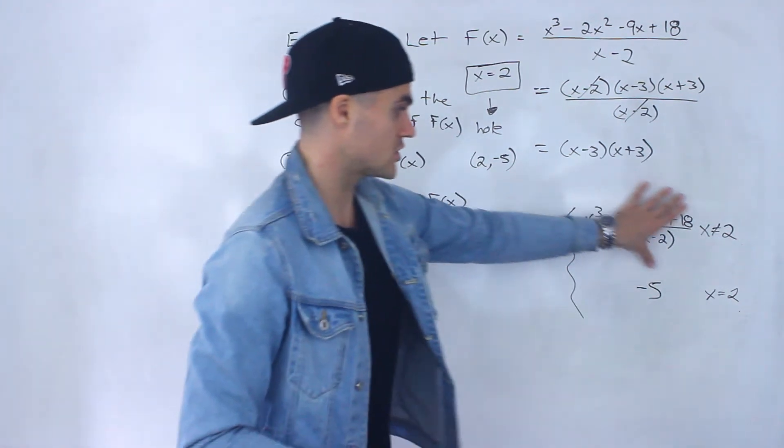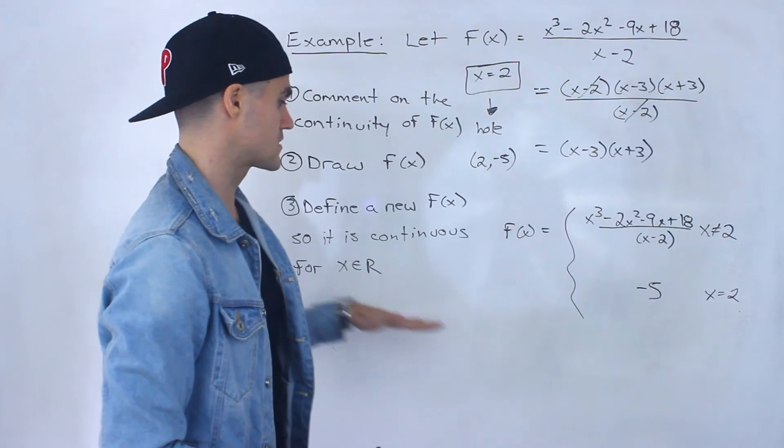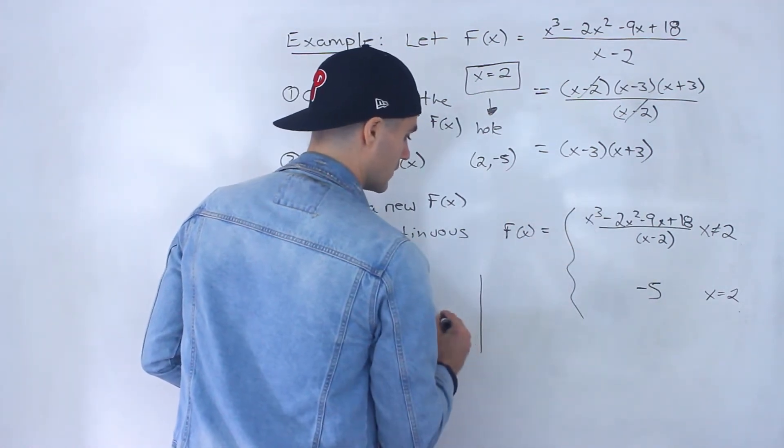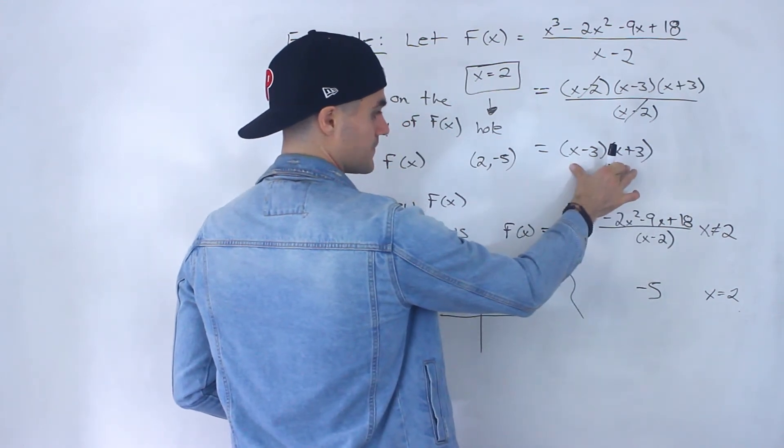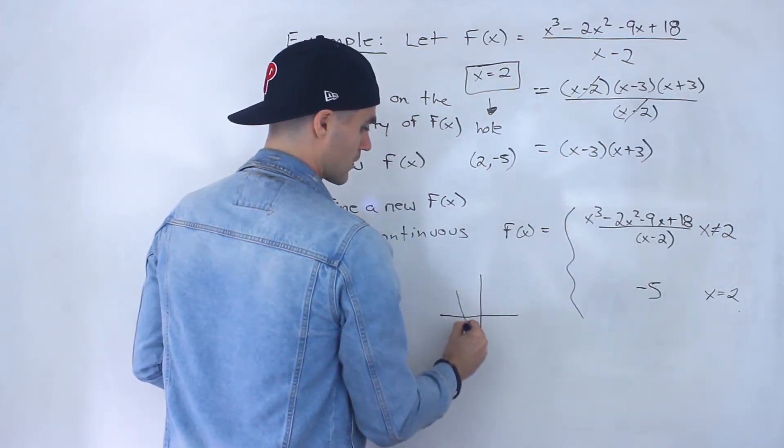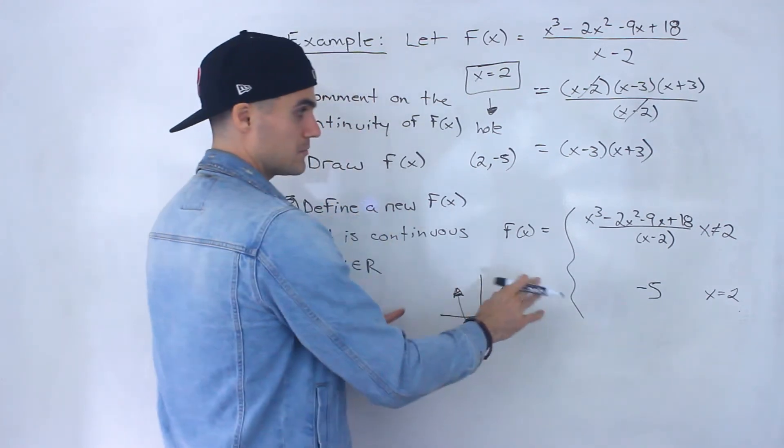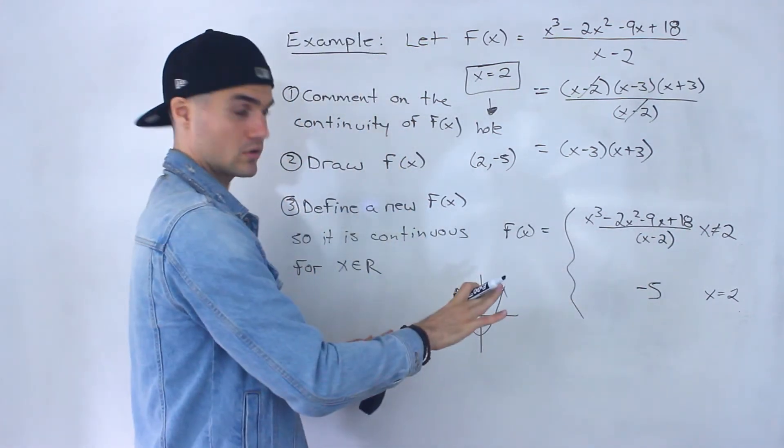And so now this function here is continuous for all x values, because if we took this and graphed it, remember this simplifies to this. So we would end up having a parabola. That's what it's going to be for all x values not equal to 2.